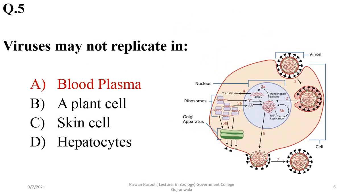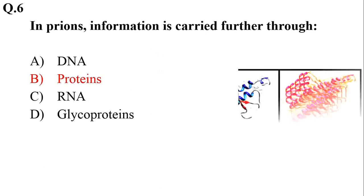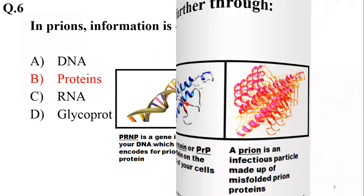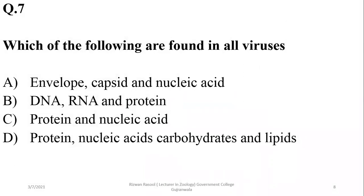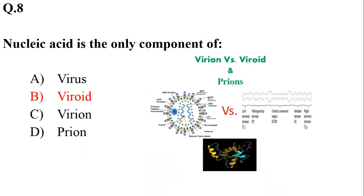Viruses are obligate intracellular parasites. In prions, information is carried through proteins only — they are protein infectious particles only. All viruses must have both protein and nucleic acid. Nucleic acid is the only component of viroids, as they are made up of RNA only.